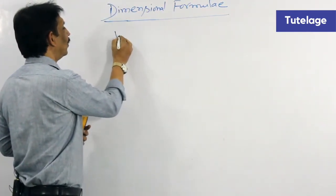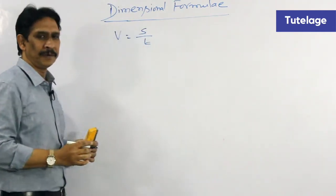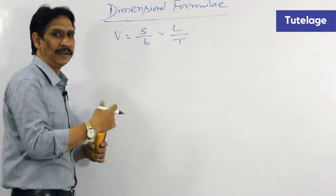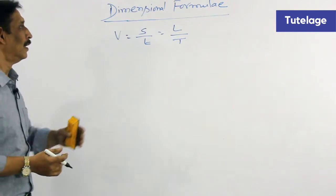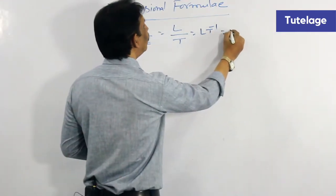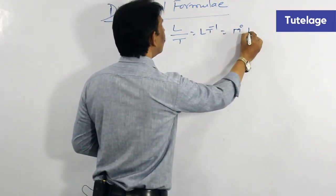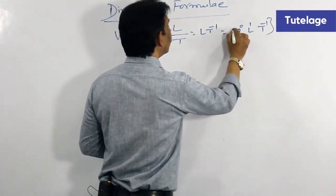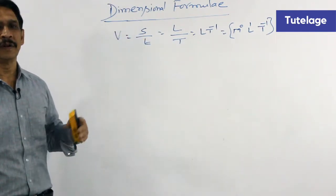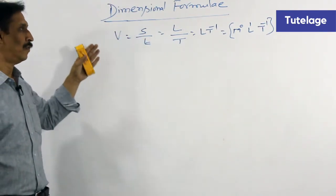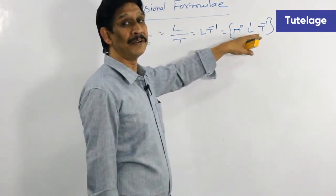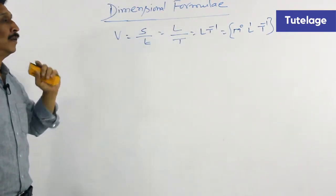For example, velocity. Velocity is equal to displacement by time. Displacement we measure in terms of length and time we measure in terms of seconds. L by T is nothing but L T minus 1, which is nothing but M0 in mass, L1 in length, and T minus 1 in time. The powers 0, 1, minus 1 are known as the dimensions of the physical quantity, and M0 L1 T minus 1 is the dimensional formula for velocity.